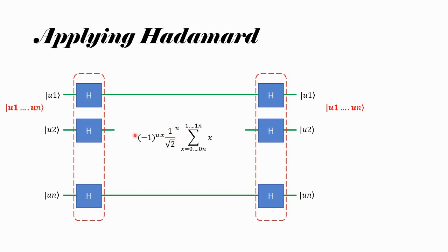So that magnitude is correct. The only thing left is the phase of the amplitude, which is (−1)^(u·x). If u·x = 0, the phase is positive; if u·x = 1, it is negative. So I can represent the state this way. And if this is the state of the qubits at this point and we apply Hadamard gates again, what we get back is u. So remember this equation — if you have the superposition state in this form and then apply Hadamard, you get u back. This is what we are going to use in the Bernstein-Vazirani algorithm.